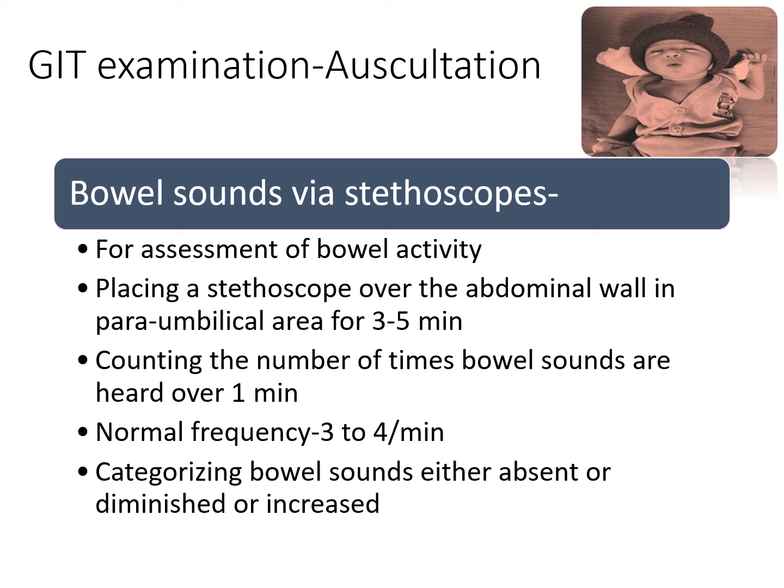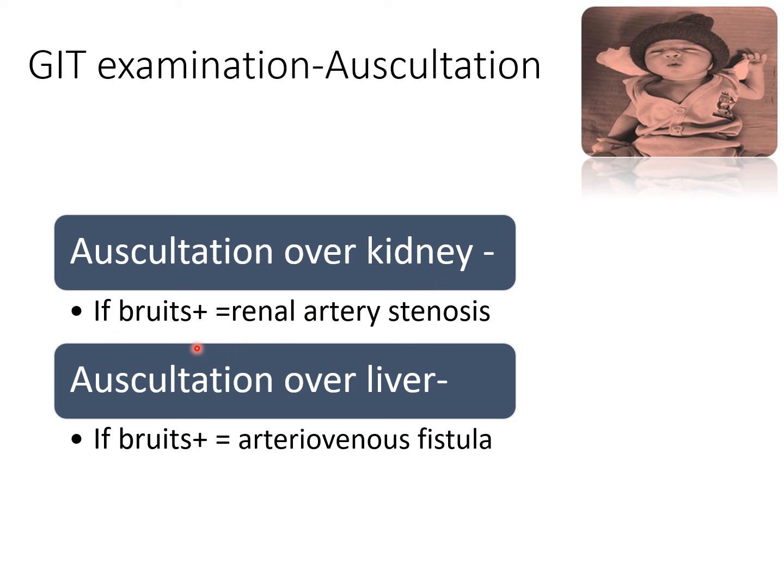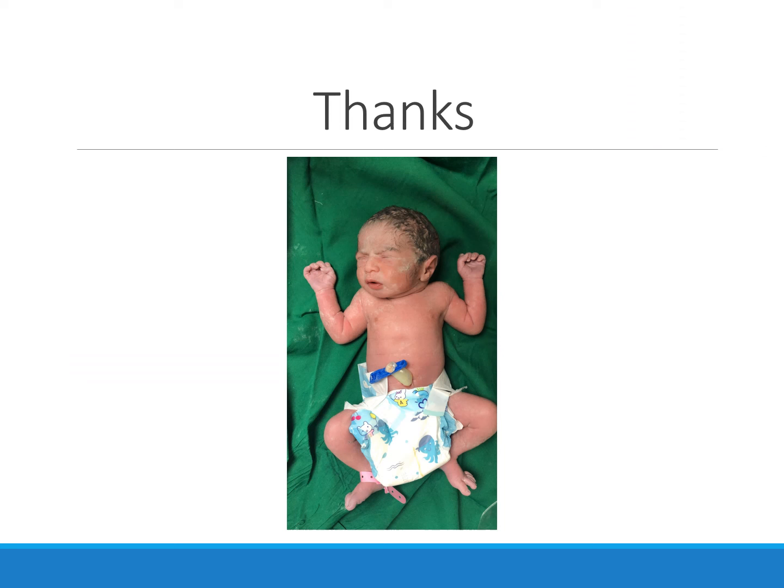Then we should auscultate over the kidney — if a bruit is audible, then the possibility of renal artery stenosis should be considered. Auscultation over the liver area should also be done — if a bruit is audible, that means an AV fistula can be there. So this is all about GIT examination in newborn.